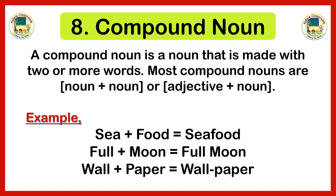Last is the compound noun. A compound noun is a noun made with two or more words. Most compound nouns are noun plus noun or adjective plus noun. For example, sea is a noun and food is also a noun; when combined, they become seafood — a compound noun. Another example: full is an adjective and moon is a noun; combined, they become the compound noun full moon. Similarly, wall plus paper becomes the compound noun wallpaper.